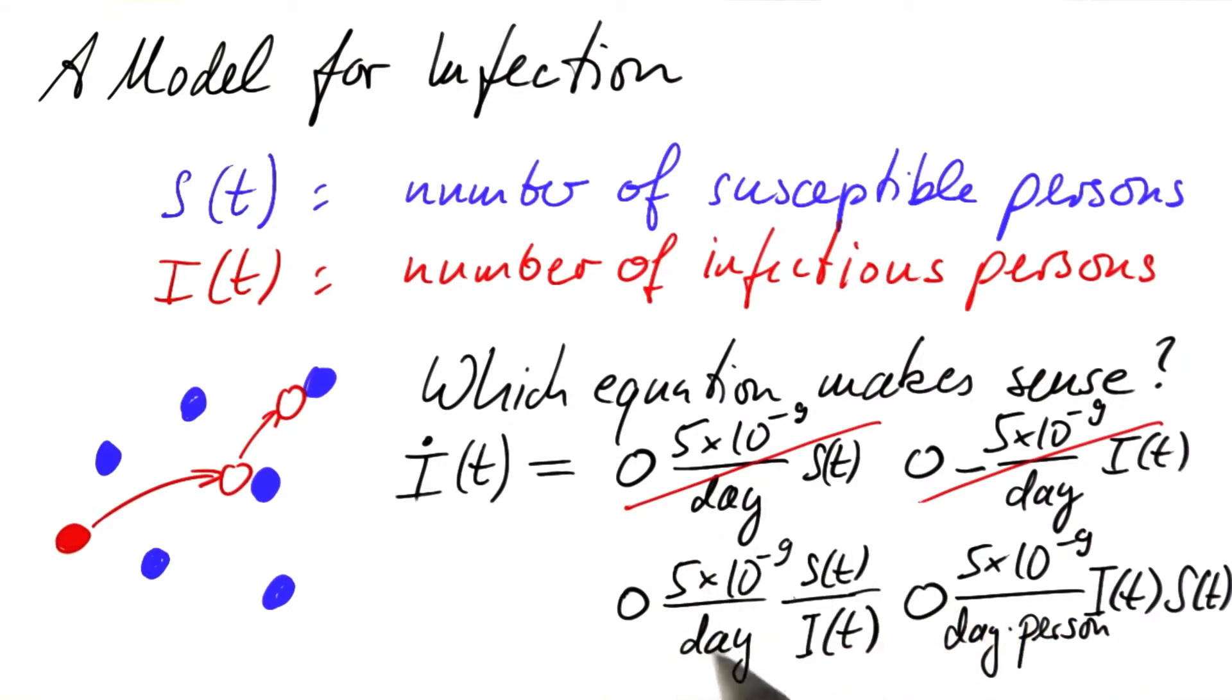And there is another reason why this does not make sense. The unit would be one over days times persons over persons. These cancel, and the unit of the result is one over days. But what we need is persons per day. So this cannot be true for several reasons.